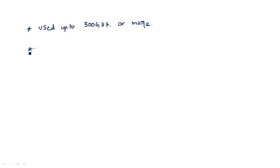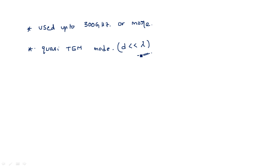Microstrip transmission lines exhibit quasi-TEM mode for distances which are less than the operating wavelength. Generally, in any type of waveguide — rectangular or circular — TEM mode does not exist, but in the microstrip transmission line a quasi, meaning partial, TEM mode exists, provided the length of the transmission line is less compared to the operating wavelength. These are the salient features of microstrip transmission lines.